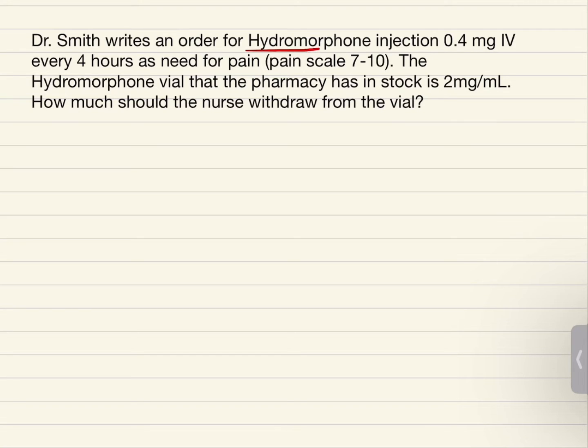Dr. Smith writes an order for hydromorphone 0.4 mg IV every 4 hours is needed for pain. The vial we have in stock is 2 mg per ml. How much does the nurse need to withdraw?